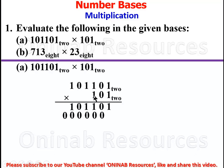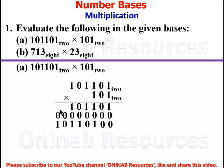We start recording our result under the 1. 1 times 1 gives 1, 1 times 0 gives 0, 1 times 1 gives 1, 1 times 0 gives 0, and 1 times 1 gives 1. We fill in the spaces for proper alignment.